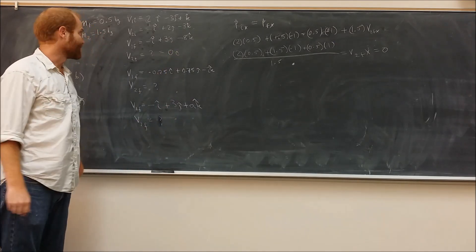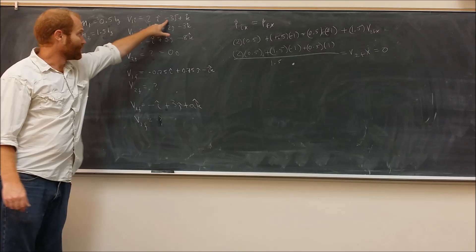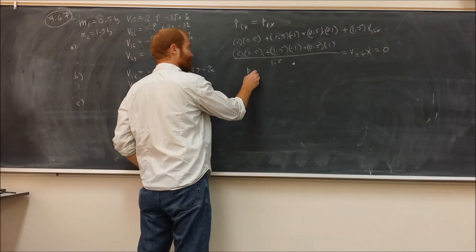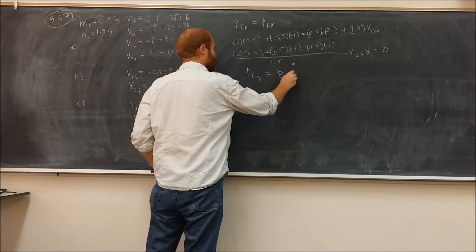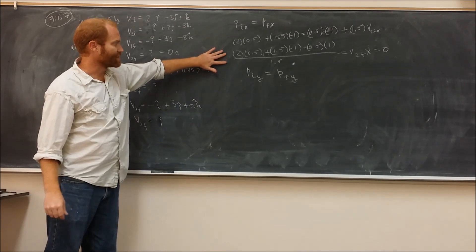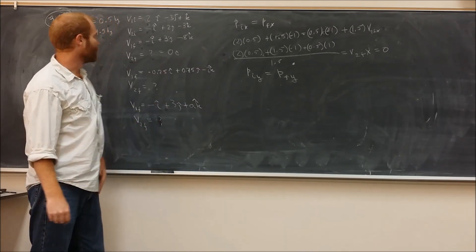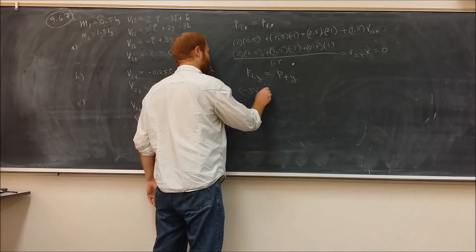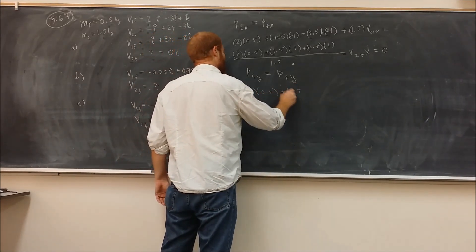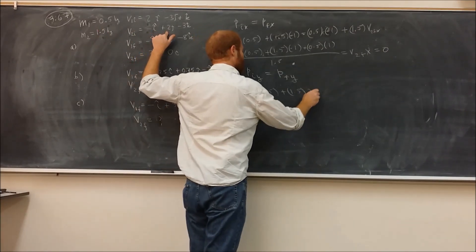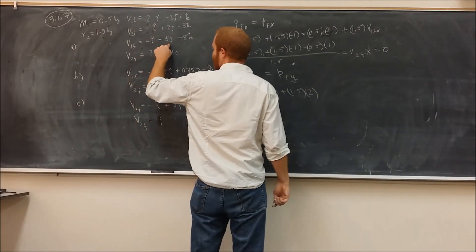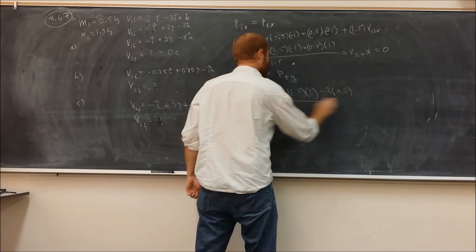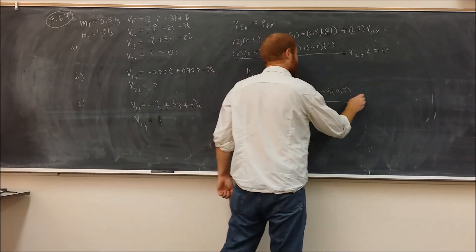We need to do the same calculation for this component and for this component. So for the second one here, we're going to be using Piy equals Pfy. I'm just going to write a very similar expression to this for the y direction. So we're going to have negative 3 times 0.5. We're going to have 1.5, this mass times this too.